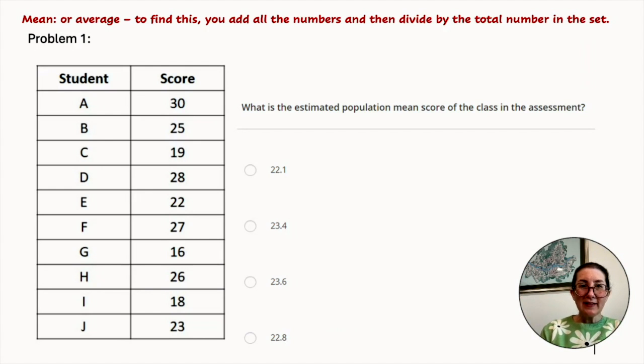Problem number one. What is the estimated population mean score of the class in this assessment? Mean or average. To find this, you add all the numbers and then divide by the total number in the set. So let's find the number in the set. 1, 2, 3, 4, 5, 6, 7, 8, 9, 10. So we know there are 10 numbers in the set. Now we add the numbers up.